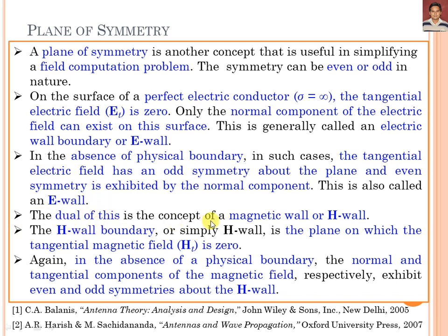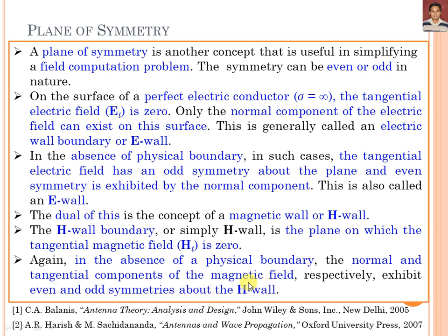The dual of this concept can be understood in the form of a magnetic wall or H-wall. The H-wall is the plane on which the tangential component of the magnetic field Ht is 0 — in contrast to the E-wall where Et is 0. In the absence of physical boundaries, the normal and tangential components of the magnetic field exhibit even and odd symmetry respectively about the H-wall.